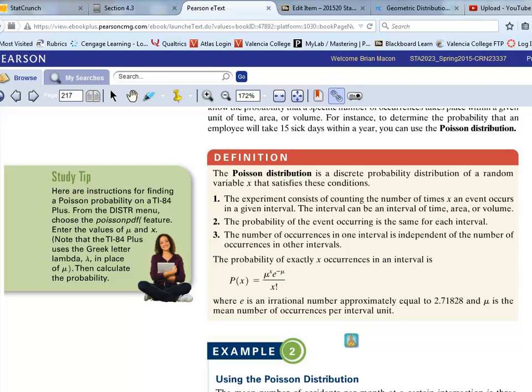The random variable x satisfies the given condition shown here in this box. Ultimately, the thing that we're going to cue into here is that we're counting the number of times that an event occurs in a given interval.